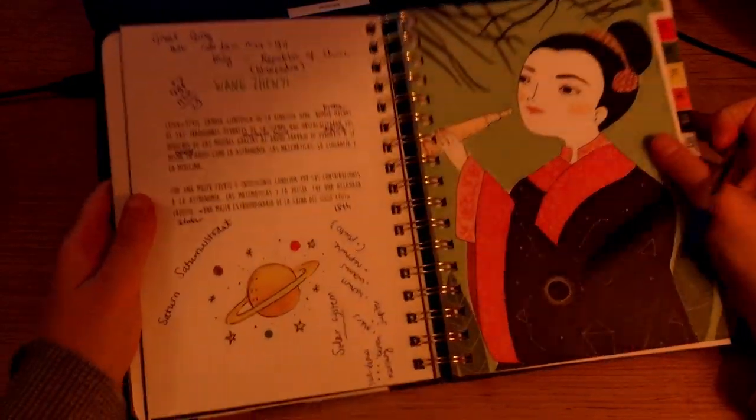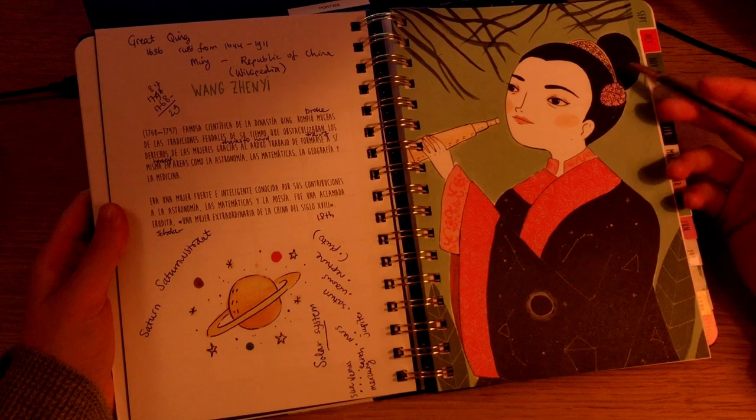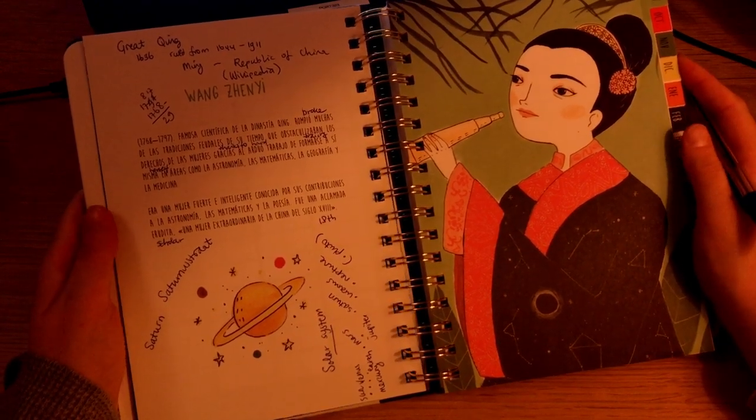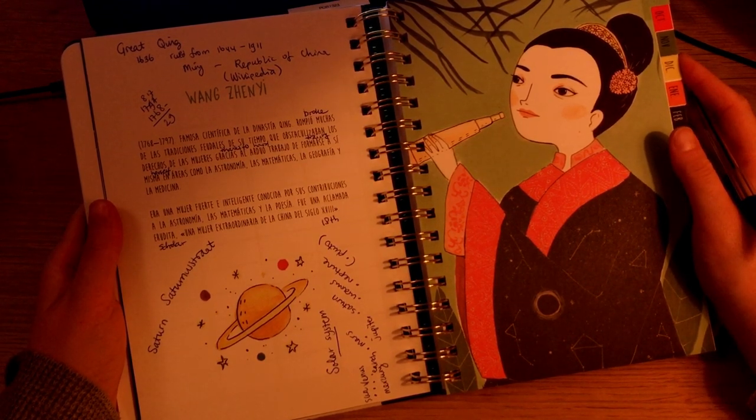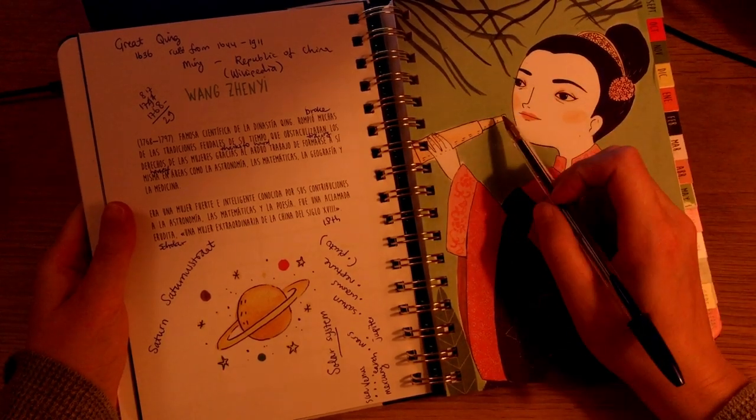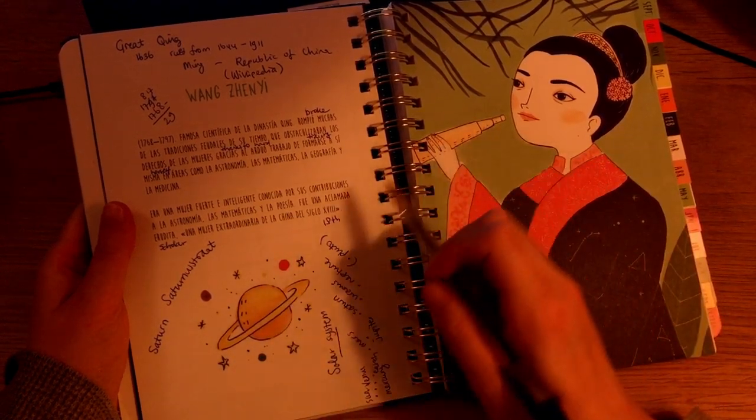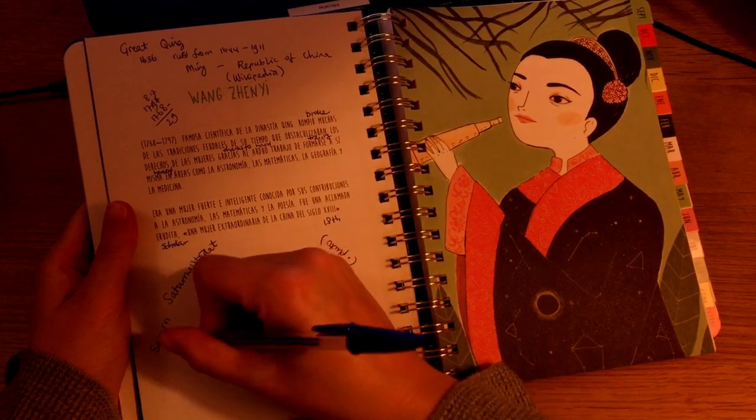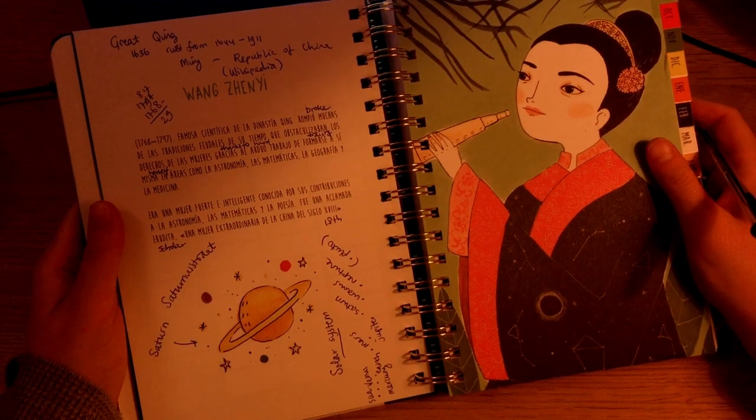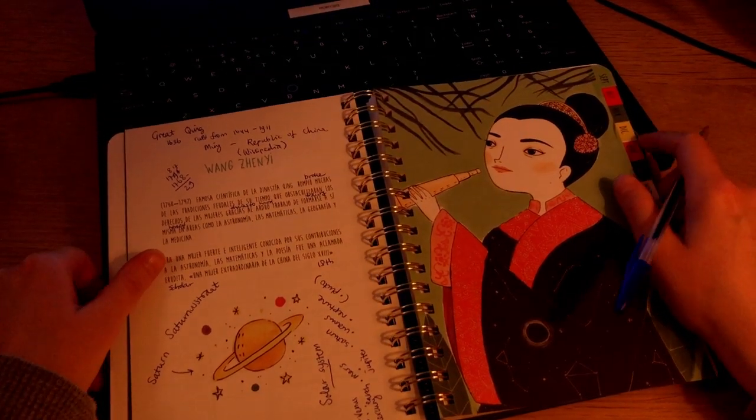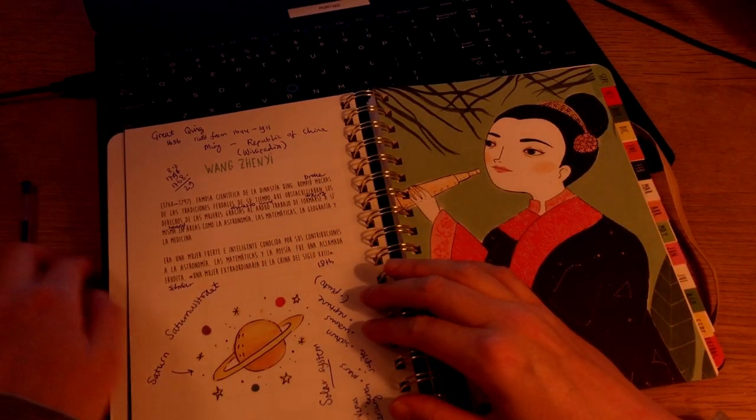Alright, so there she is. She looks beautiful and intelligent. I wonder if they knew how she looked, there probably were paintings of her, I don't know. And she has this thing so that she can look at the stars and the planets. Clearly she is looking at Saturn. Alright, Wang Zhenyi. I don't know how to pronounce it. Okay, that's very good, I like that.